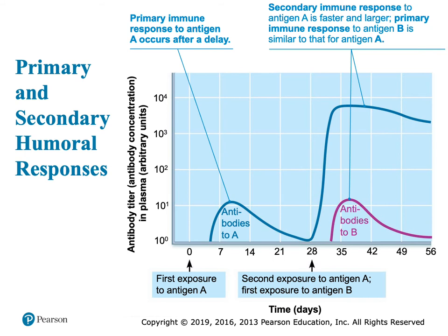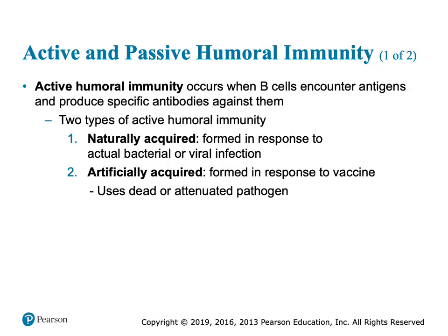Sometimes we do antibody titers to see if this is an old response — it's high and staying high, or really high and declining. Or you do a titer where you get blood, see a little response, recheck it in a month, and now the response is through the roof. Then you can timeline when the actual initial infection happened — like being exposed to a tick or something like that.